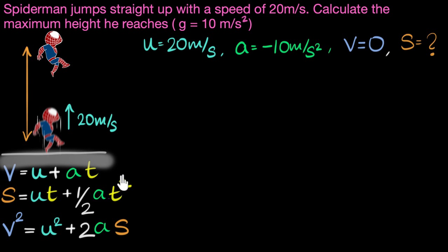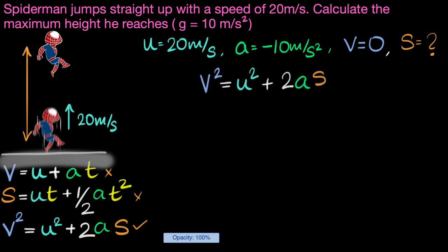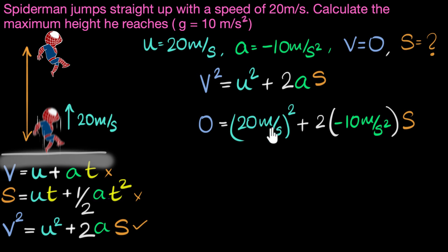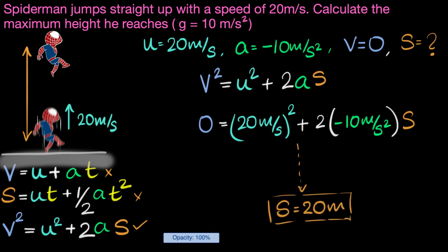Which equation do we go for? We can't use the first equation because it doesn't have S. We can't use the second equation because it has T and we don't know the time. That only leaves us with equation number three. Substituting the values, we get 0 equals 20 meters per second squared plus 2 times minus 10 meters per second squared times S. Simplifying, the displacement S works out to be 20 meters — Spider-Man reaches a maximum height of 20 meters.